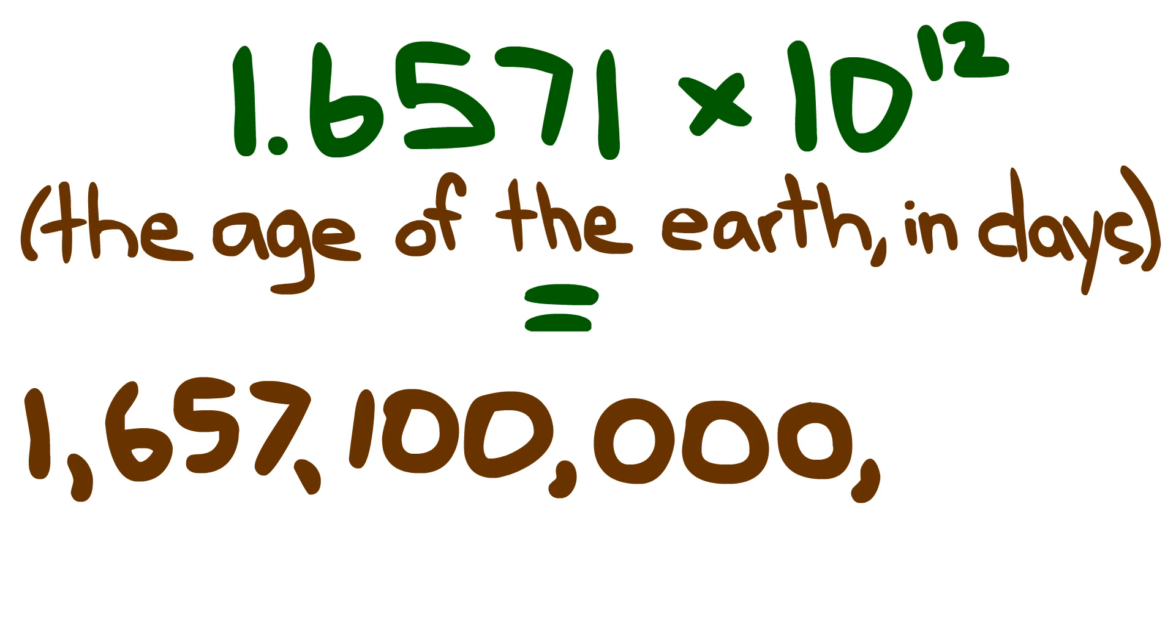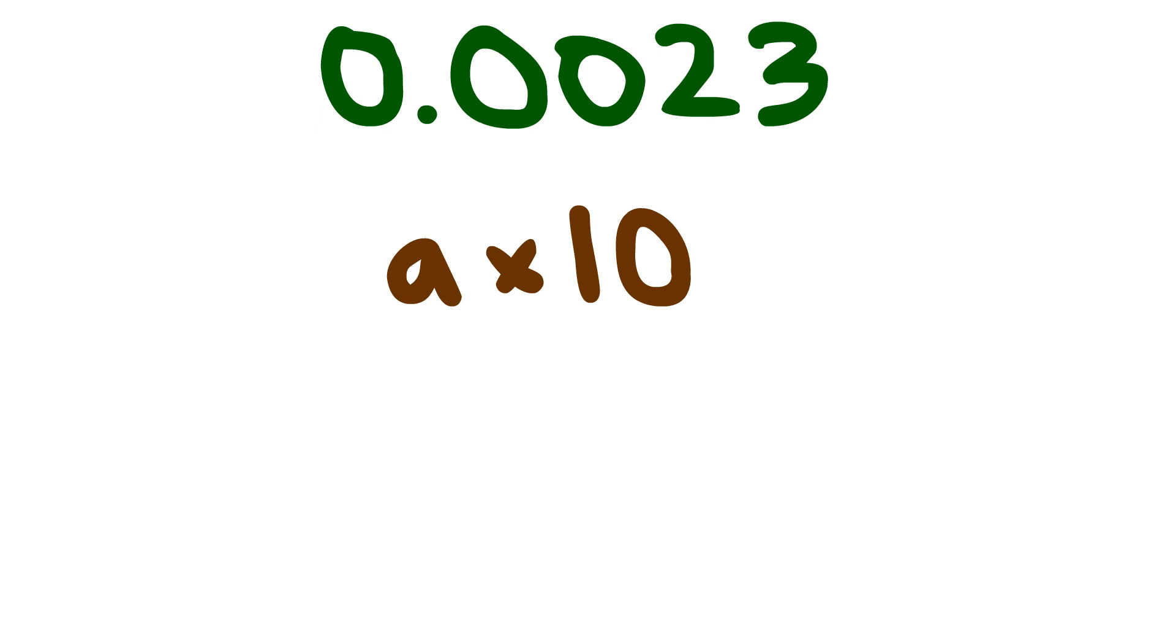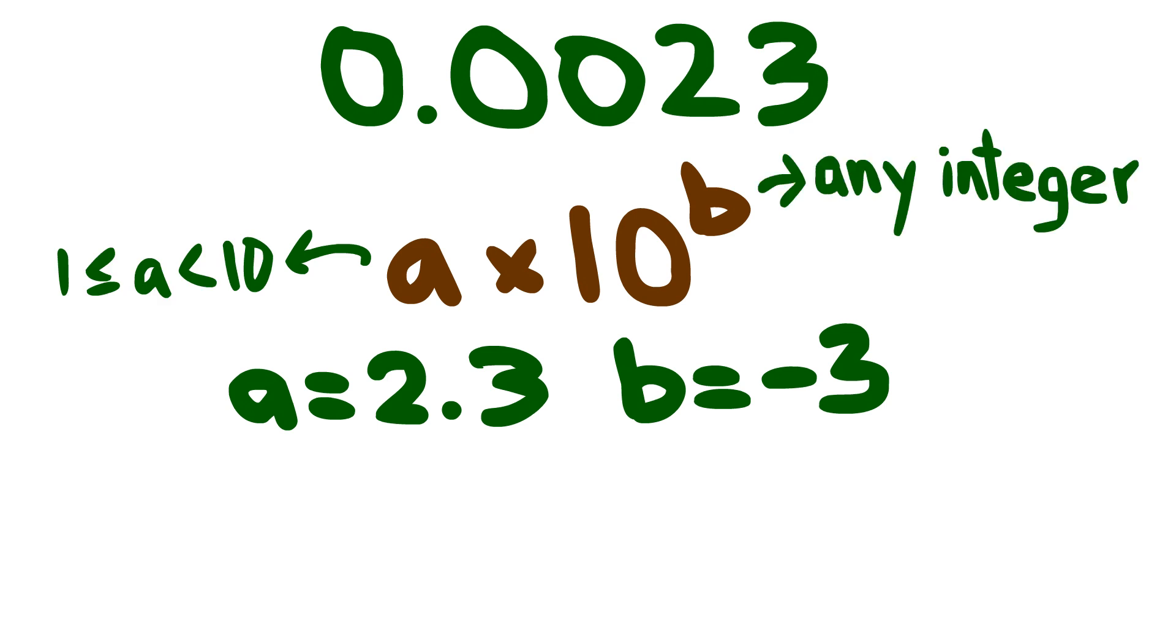Take a number like 0.0023. Plug it into a times ten raised to the power of b, where a equals 2.3 and b is negative three. You get 2.3 times ten raised to the power of negative three.